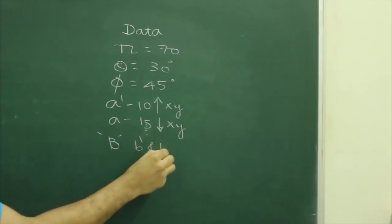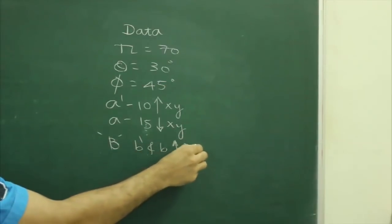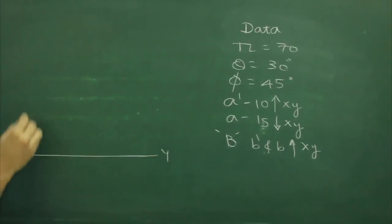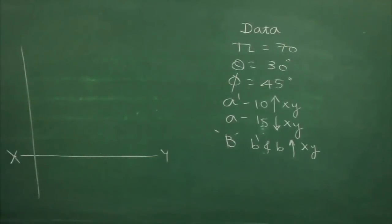So b dash and b will be above xy line. First we will draw xy line and then mark a dash and a. A dash would be here, a would be here. We have angle theta and phi.